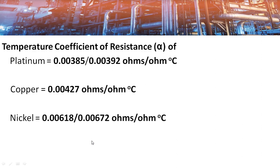Here you can see the temperature coefficient of resistance alpha values for different metals. The higher the value, the higher the sensitivity of the RTD. For platinum, there are two values: 0.00385, used for industrial applications, and 0.00392, used for lab applications where high accuracy is required. You can also see the alpha values for copper and nickel, and RTDs with other alpha values are also available in the market.